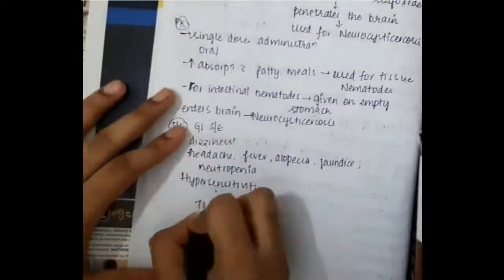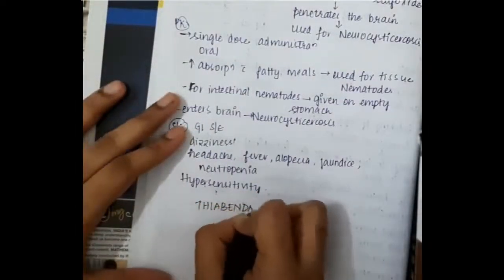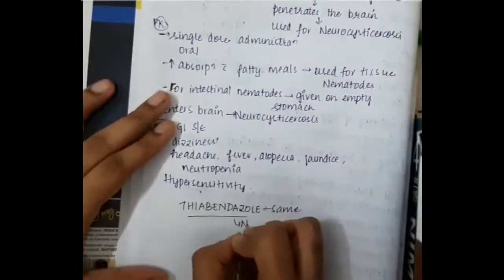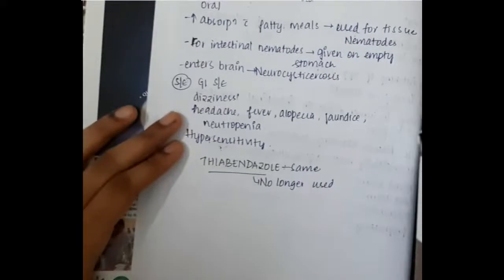Then the next important drug is thiobendazole. Thiobendazole is almost the same as mebendazole, but it is no longer used. So these are the important three drugs: mebendazole, albendazole, and thiobendazole. Thank you for watching.